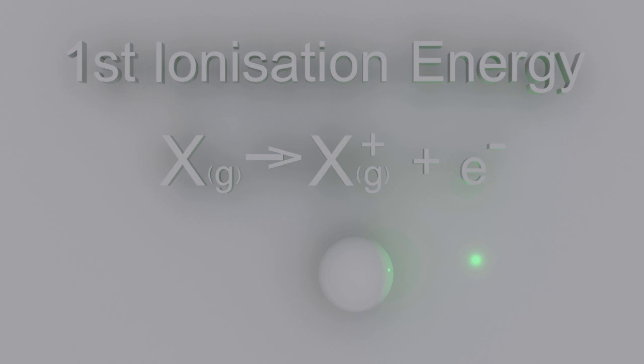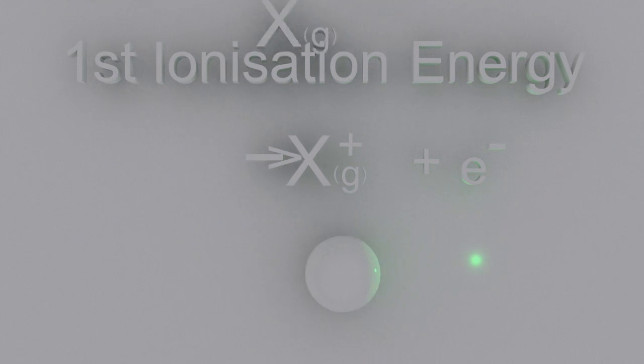And if it's standard first ionization energy, you want to say at STP. Second ionization energy is removing an electron from a monopositive gaseous ion. Don't forget to say gaseous.